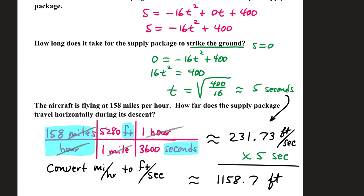Now if the package is traveling this fast for five seconds, it will travel a horizontal distance of 1,158.7 feet.